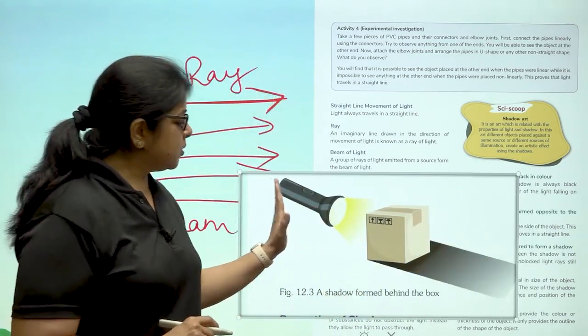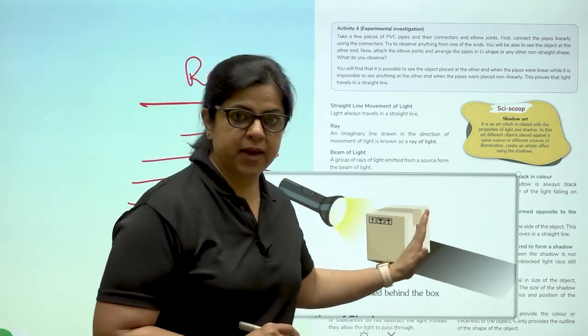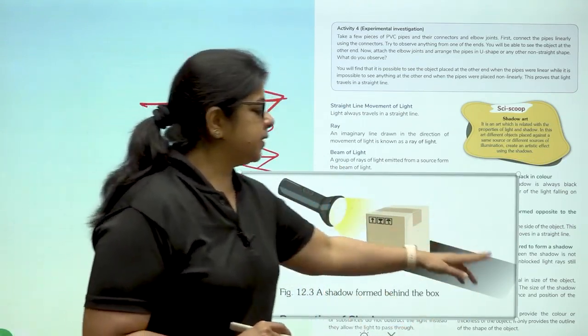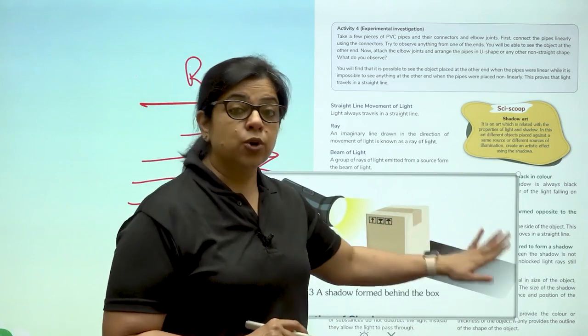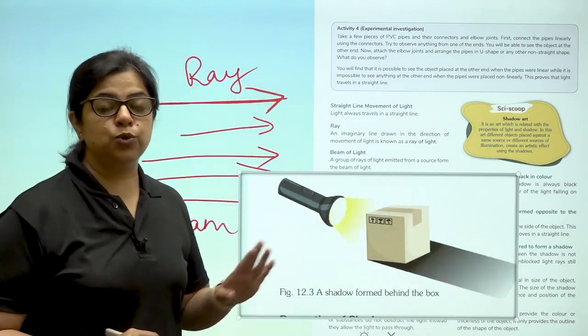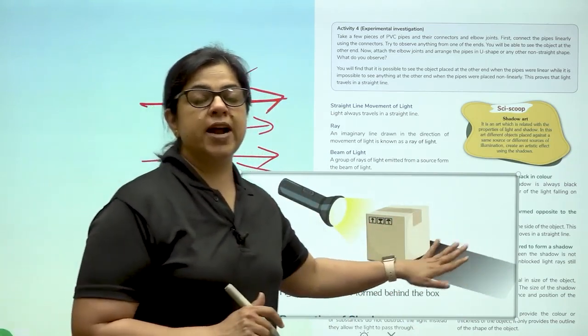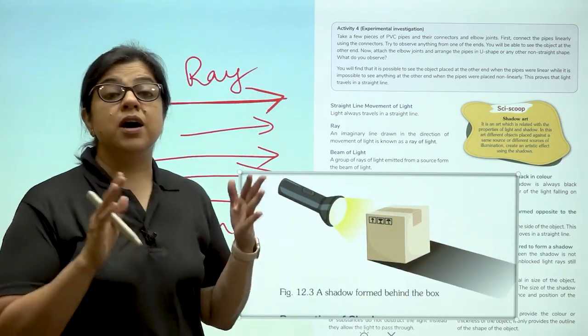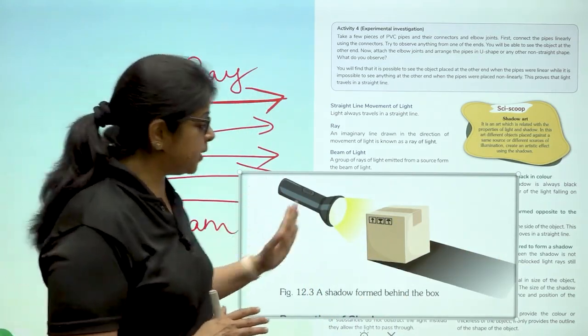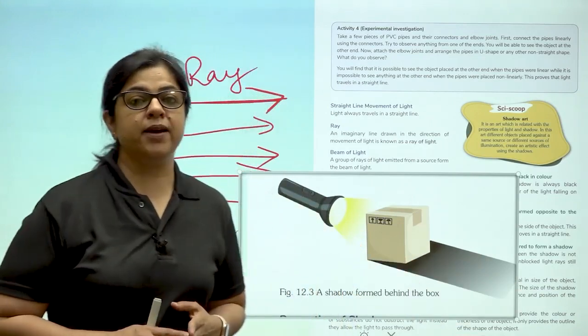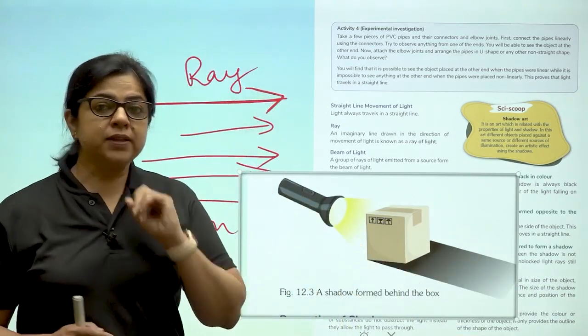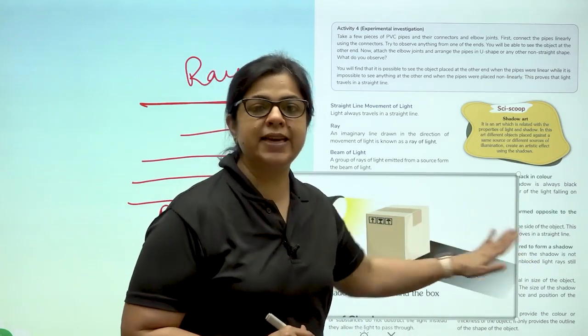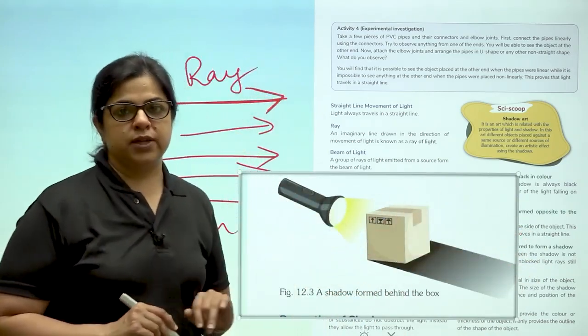Because this object which is opaque does not allow light to pass through it. That is why this shadow. Looking carefully at the shadow, we come to know that number one, a shadow is always black in color. Number two, a shadow is always formed behind the opaque object. Number three, a shadow will always be formed when there is a ground, a screen behind the object.